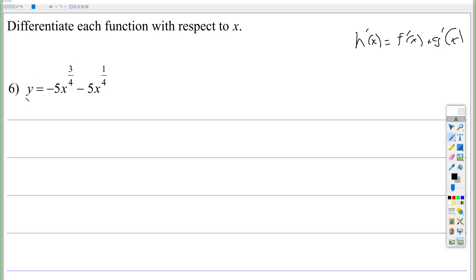Here's a function when you take the derivative, you're going to take the derivative of this, subtract the derivative of the second one. Okay, so dy dx or y prime, so there's a negative 5, I'm going to leave the negative 5 there, I'm going to bring this 3 fourths down in front.